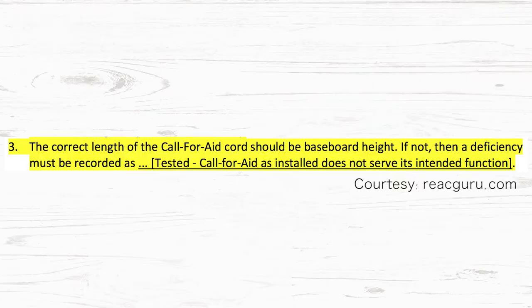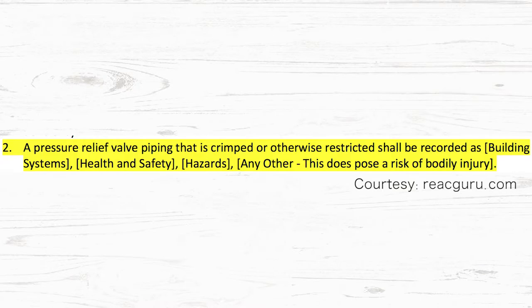For instance, there's a set distance for the Call for Aid pull cord buttons — they're now to be at a height of the baseboard. Minor chipping of the brick on the wall on the corners should no longer be considered as a spalling deficiency. A pressure release valve that's crimped or otherwise restricted shall now be recorded as a deficiency.